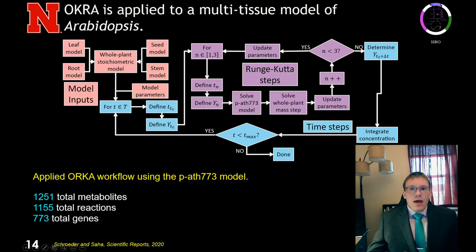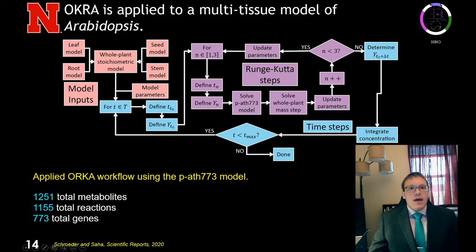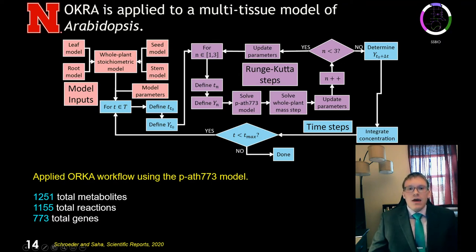ORCA is applied to this multi-tissue model of Arabidopsis. In total, the Arabidopsis model contained about 1,250 metabolites, 1,150 total reactions, and 773 genes. We called this the PATH773 model.